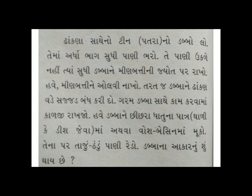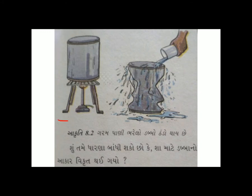મીણબત્તી ઓલવી નાખો, તરત જ ડબાને ઢાંકણ વડે સજ્જડ બંધ કરી દો. ઘરમ ડબા સાથે આ કામ કરવામાં સાવધ રહો. હવે ડબાને છીછરા ધાતુના પાત્ર અથવા વૉશ-બેઝિનમાં મૂકો, તેના પર તાજું ઠંડું પાણી રેડો. ડબાના આકારને શું થાય છે? ડબો સંકોચાઈ જાય છે, આકાર બદલી નાખે છે - સામેથી ભીંસાઈ જાય છે.